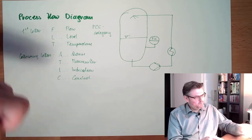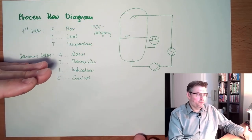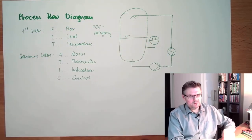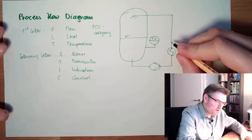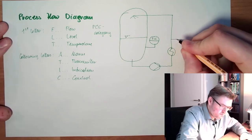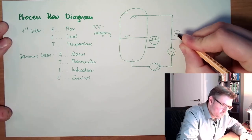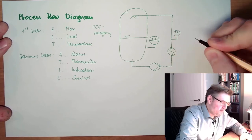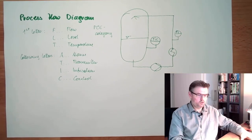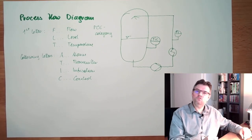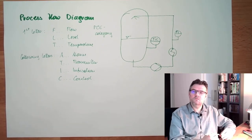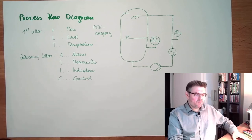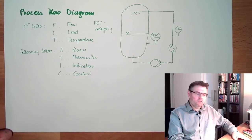Using the PCE category and the following letters gives symbols like this. For example, I have a flow indicator — I can see if the process is running or not. This is how a process flow diagram looks.